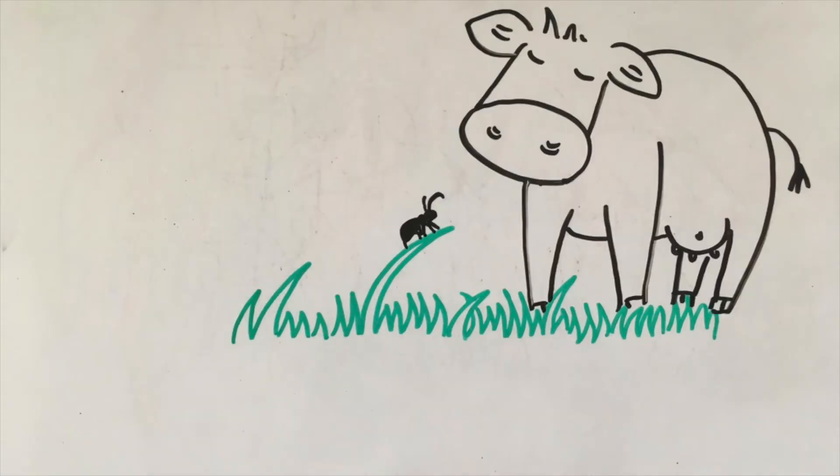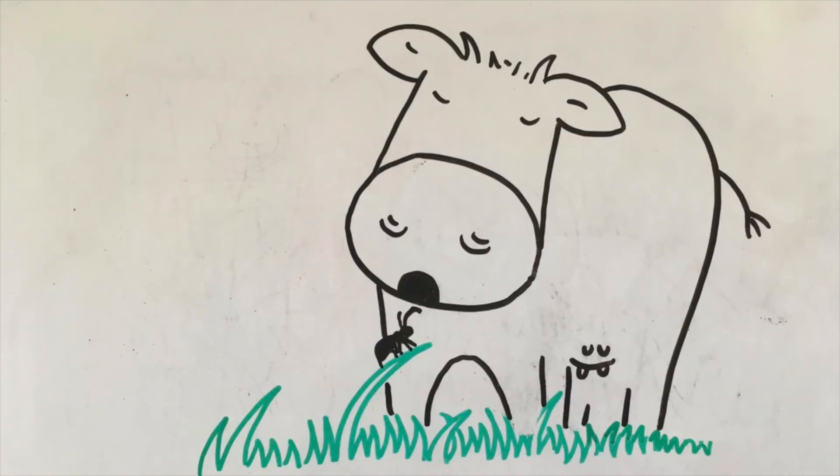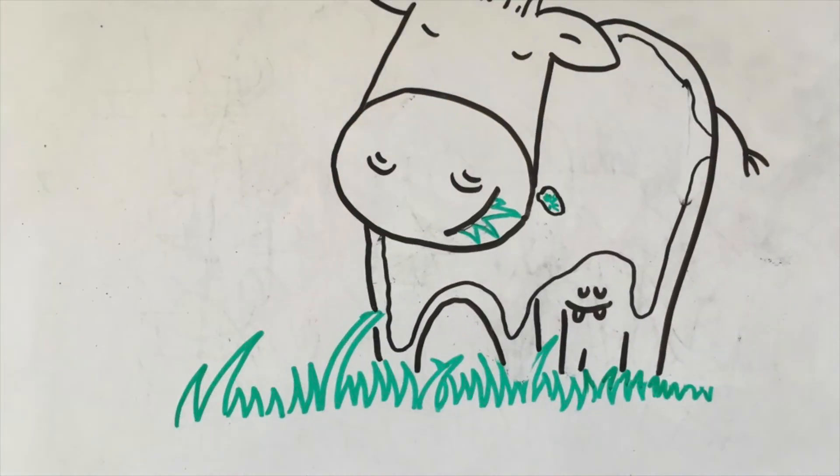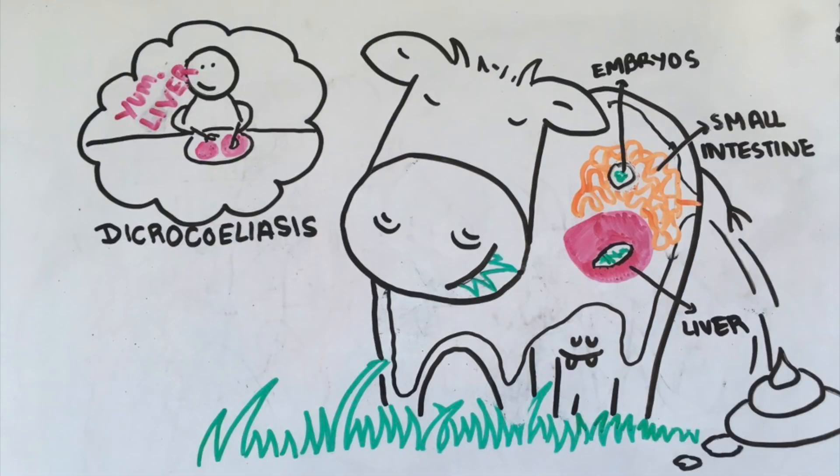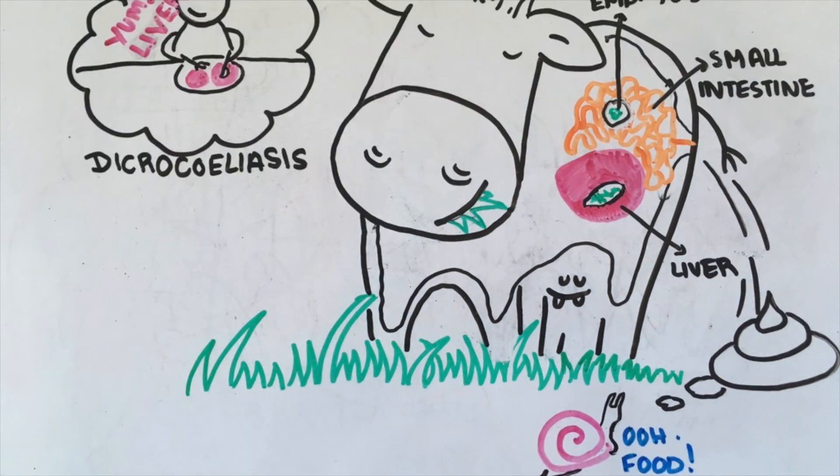Then one day, a hungry cow comes along grazing grass, and the poor ant is eaten along with a blade of grass. The now adult parasites settle down and produce more eggs to release into the cow's bile duct, which will eventually end up in the cow dung. Then a snail will come along, and it all starts over again.